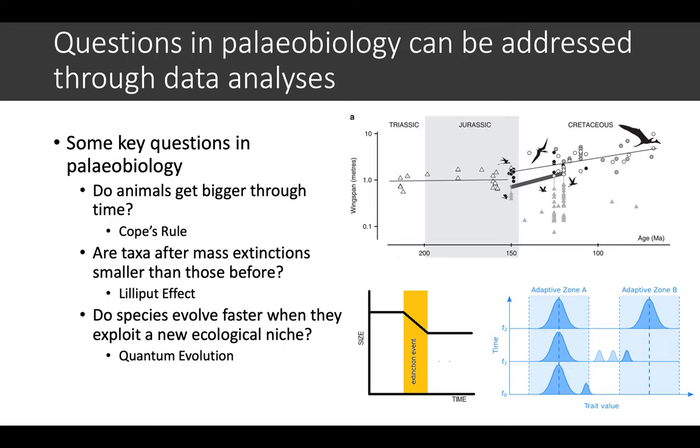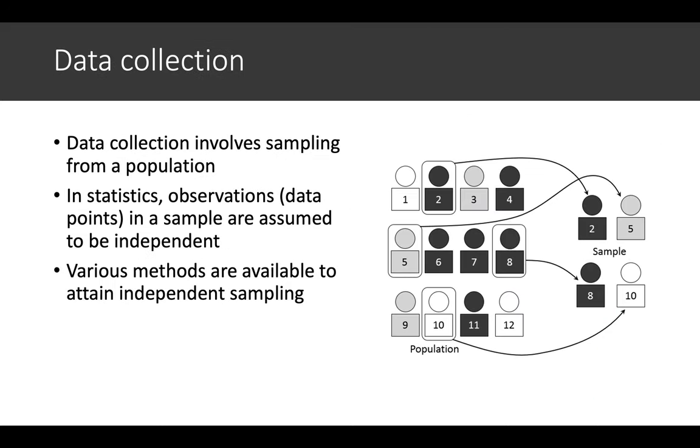When you've got data, you usually start off with data collection. Data collection involves sampling from a population, so it's often very difficult or impossible to actually collect data from the entire population, so you opt to take a sample of it.